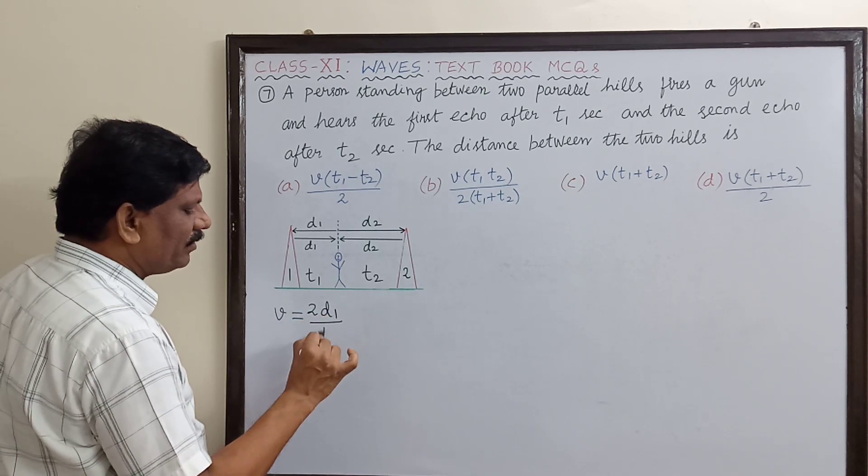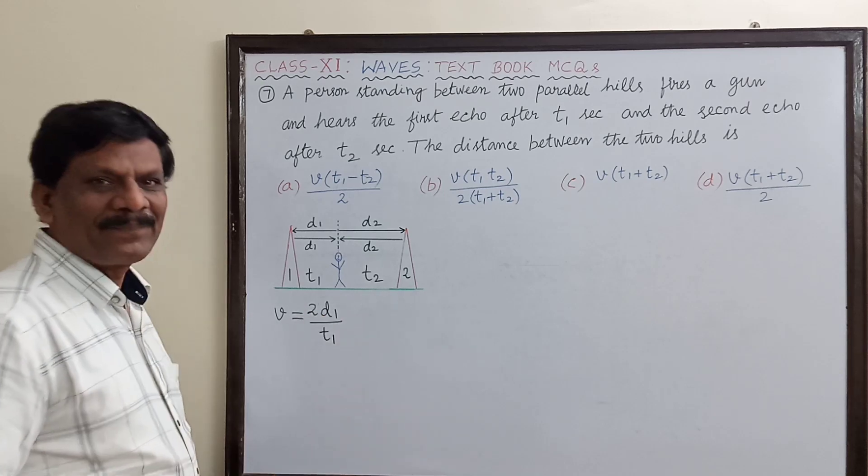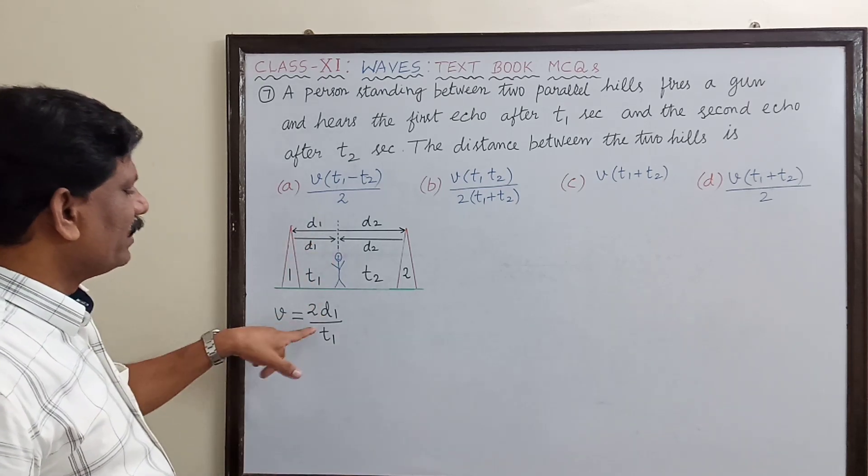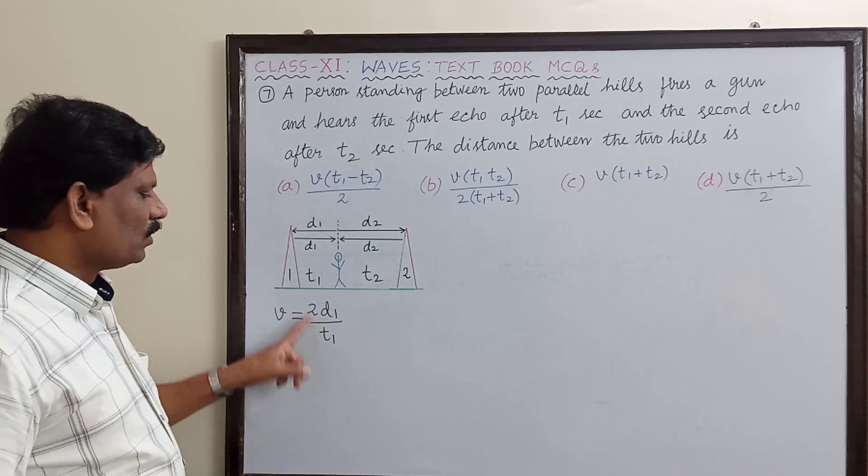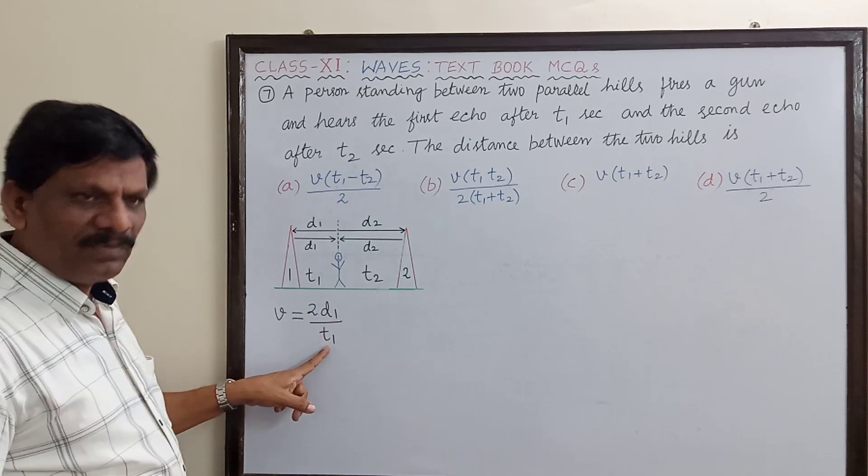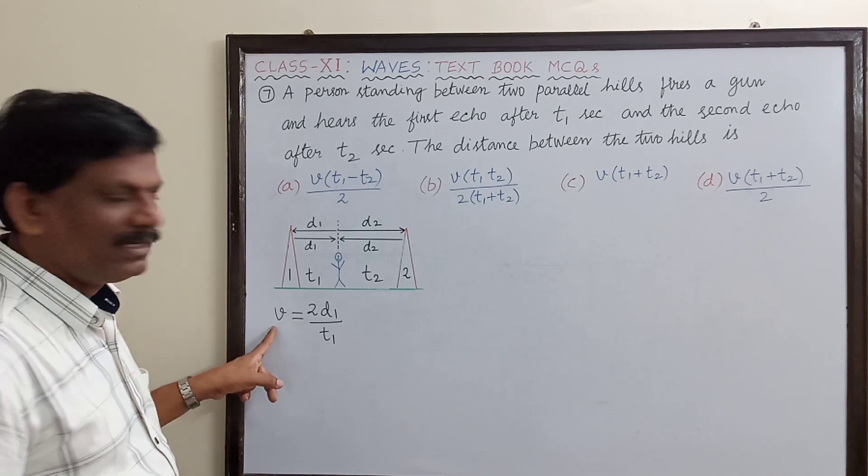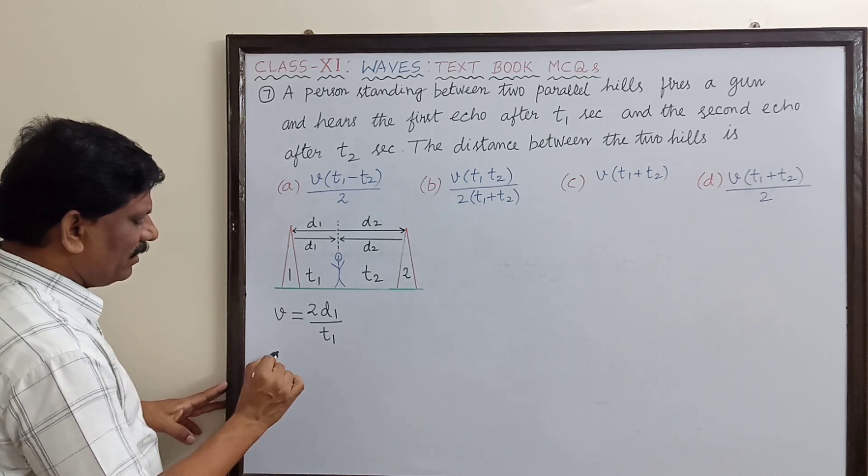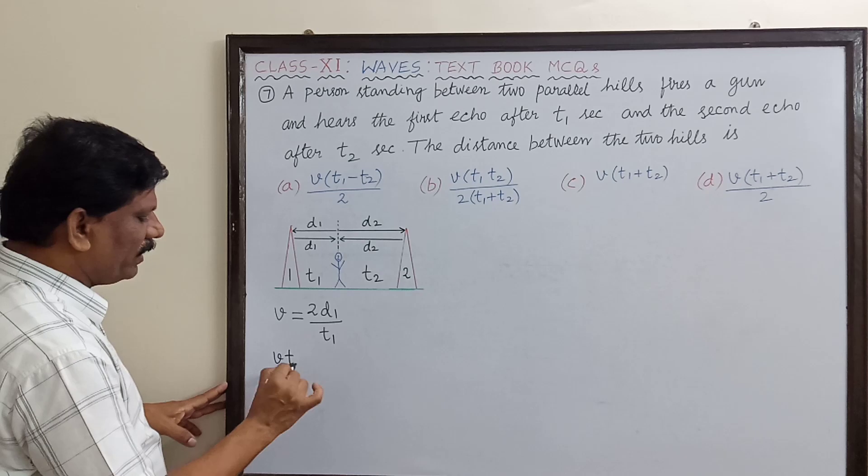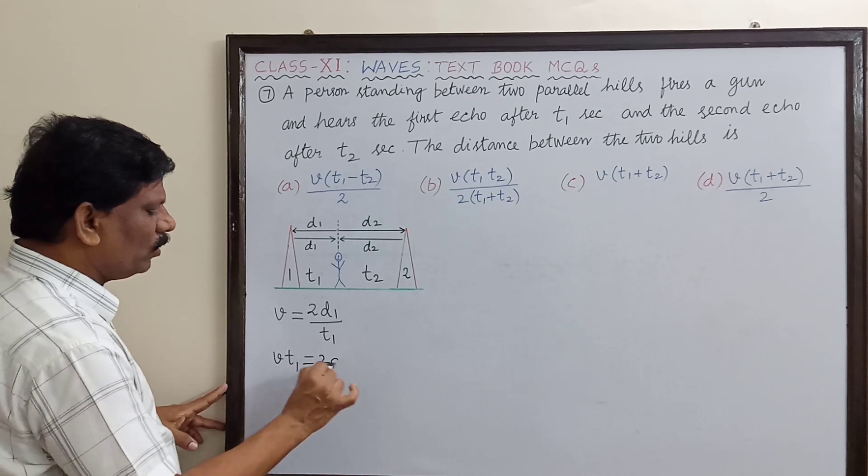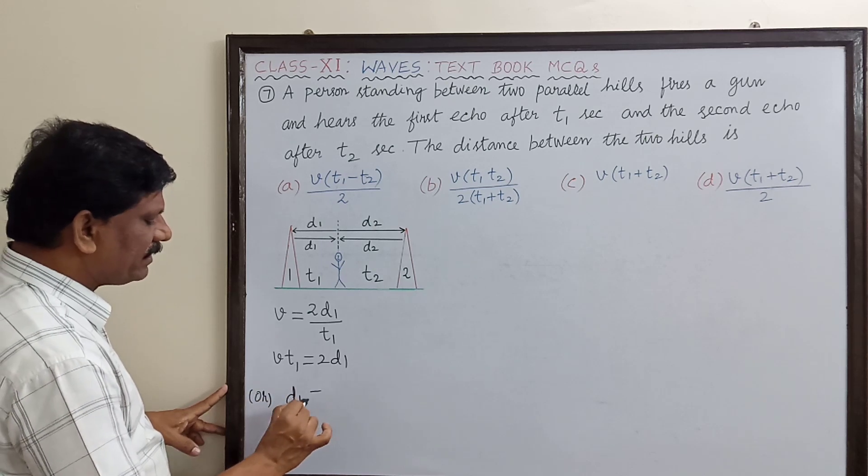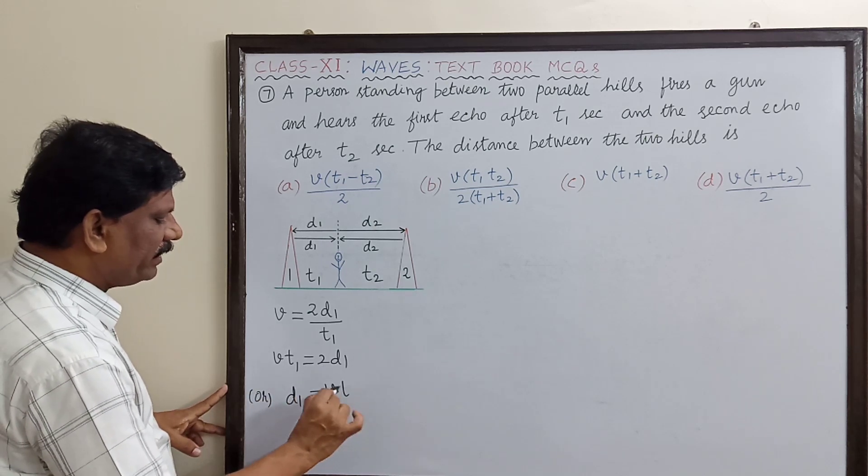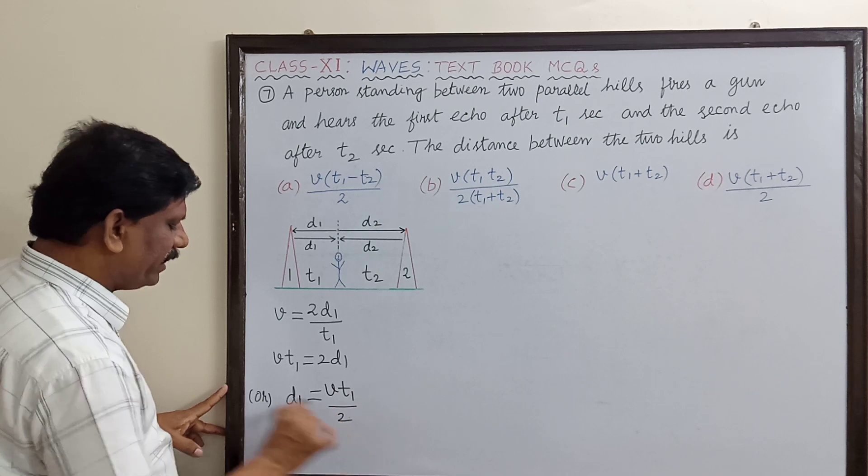So 2d1 divided by t1 must be equal to the velocity of sound. So from this, v times t1 is equal to 2d1, or the distance d1 is equal to v times t1 divided by 2.